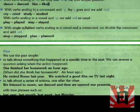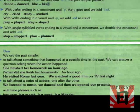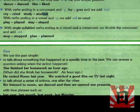With verbs ending in a consonant and Y, the Y is dropped and we add -IED. For example: 'cry' becomes 'cried'; 'study' becomes 'studied'. The rule says that when a verb ends in Y preceded by a consonant, we omit the Y and add the ending -IED.